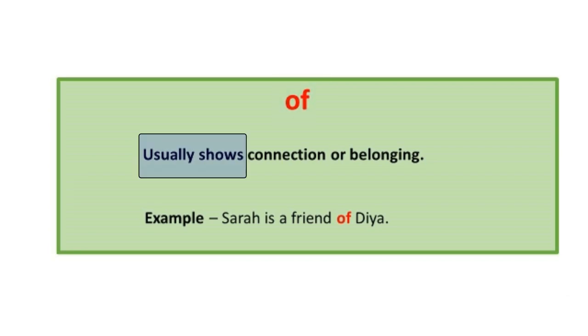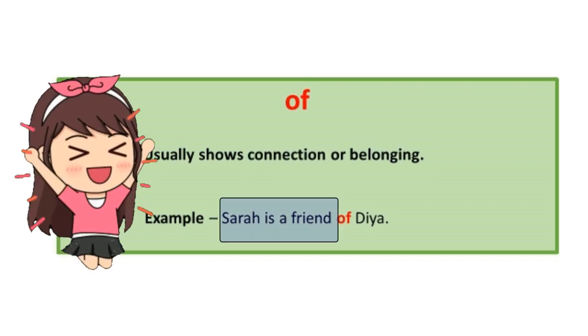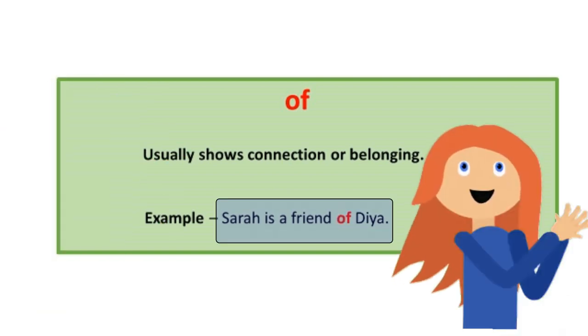The preposition 'of' is used to show a connection or belonging. For example, Sarah is a friend of Diya. So the preposition 'of' shows here the connection of Sarah with Diya.